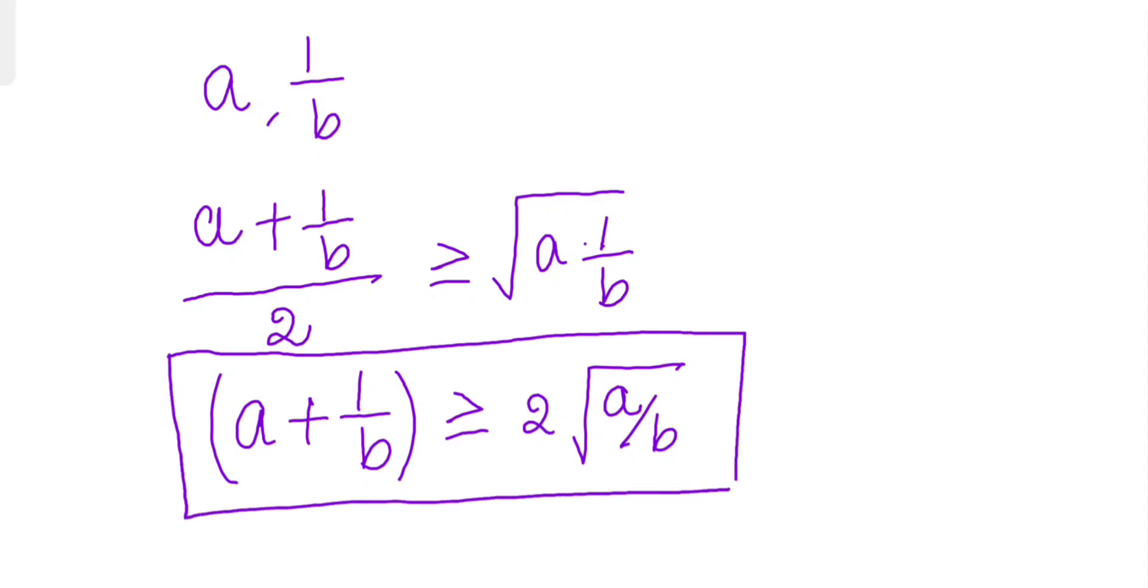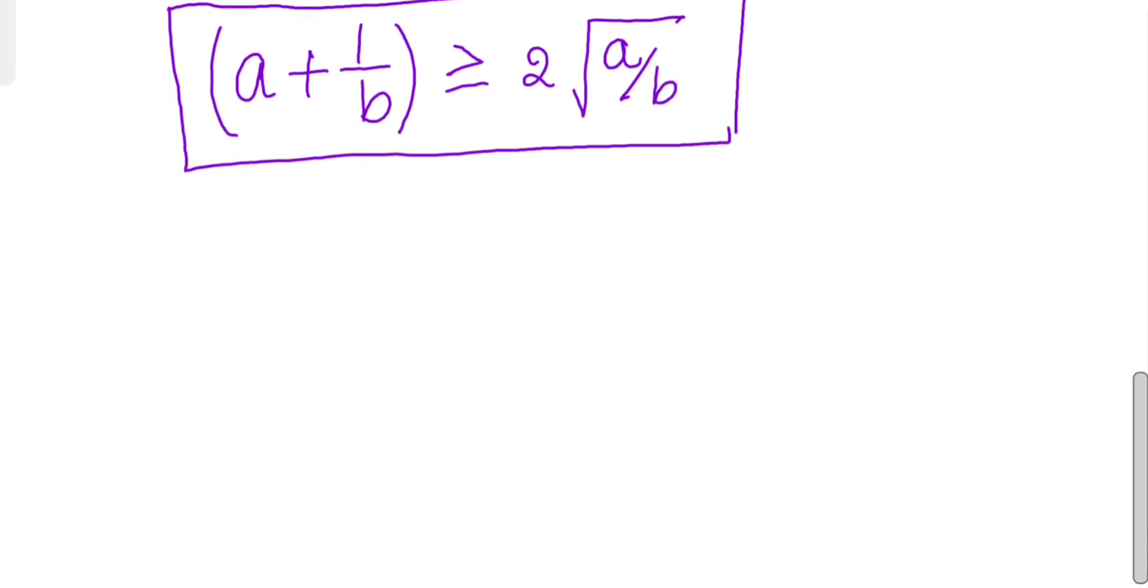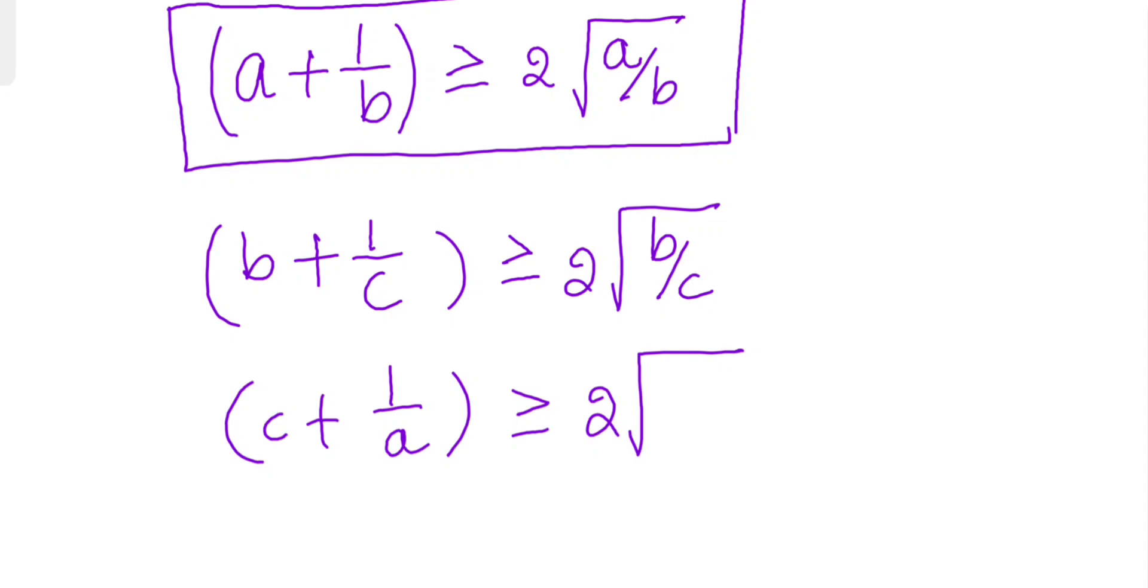And similarly we can write b plus 1 by c will be greater than or equals to 2 square root of b by c, and c plus 1 by a will be greater than or equals to 2 square root of c by a. So say this is equation 1, this is equation 2, and this is equation 3.